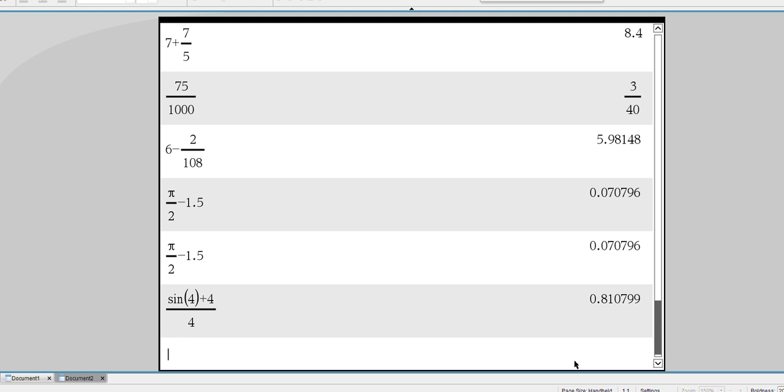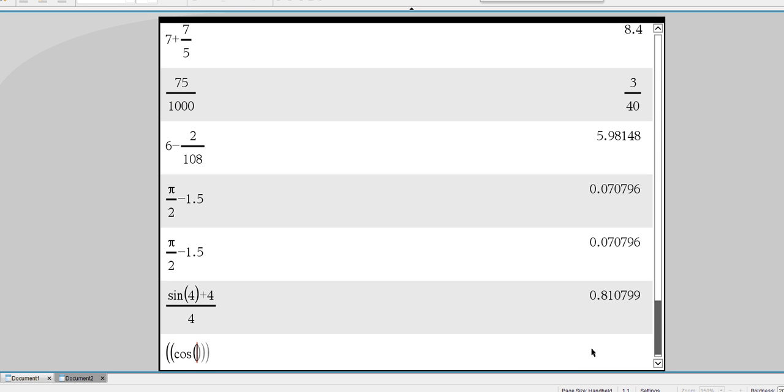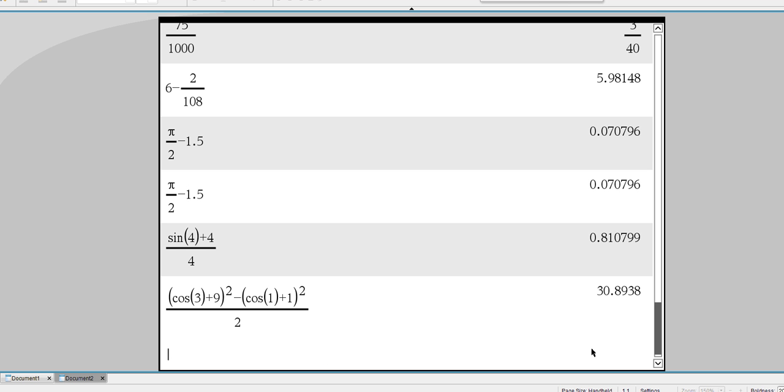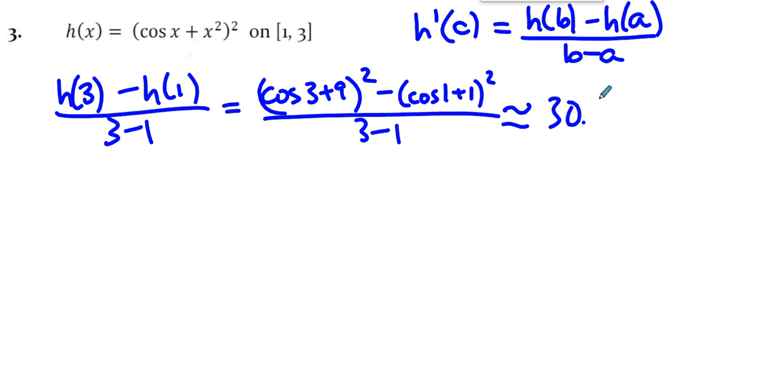Well, what is that? That's a good question. So cosine 3 plus 9 quantity squared minus cosine 1 plus 1 quantity squared divided by 2. My calculator is in radian mode. Hopefully yours is 2. And so this is 30.8938.